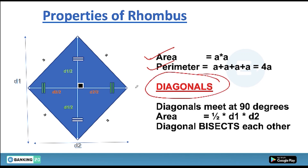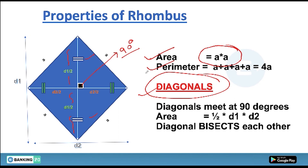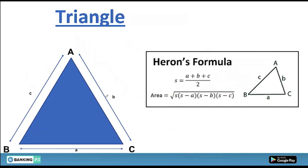Key properties of a rhombus: the diagonals always meet at 90 degrees and they bisect each other — so each diagonal is split into two equal halves: d1/2 and d2/2. The area can also be calculated using diagonals: area = ½ × d1 × d2.